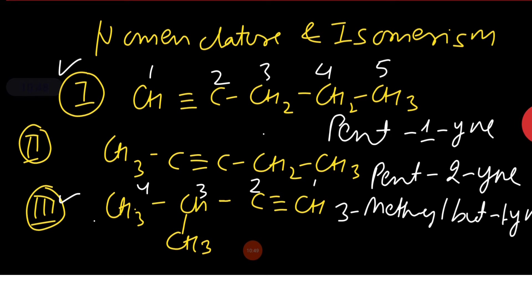Now structure 1 and 2 are position isomers because there is difference in the position of triple bond. And structure 1 and 3 as well as structure 2 and 3 are chain isomers because there is difference in the chain of carbon atoms.